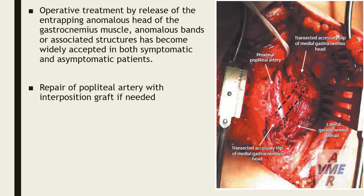The management or treatment is operative: release of the entrapping anomalous head of the gastrocnemius muscle, anomalous band, or associated structure — widely accepted in both symptomatic and asymptomatic patients. Repair of the popliteal artery with interposition graft if needed. This shows the proximal popliteal artery, the non-resected accessory slip of the medial gastrocnemius head, and the lateral gastrocnemius head.